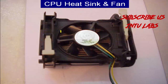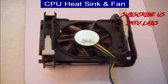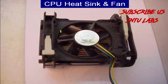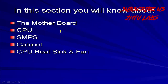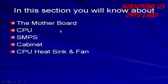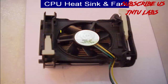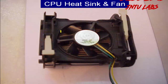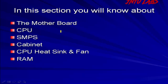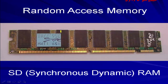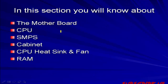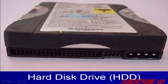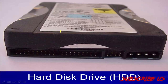Next is the heatsink fan, which is placed above the CPU. And next is RAM — Random Access Memory — which comes in synchronized and asynchronous types.